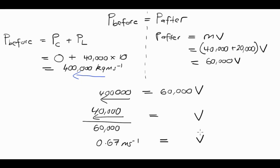And because the 400,000 was to the left, the direction carries through. So it's moving at 0.67 meters per second to the left.